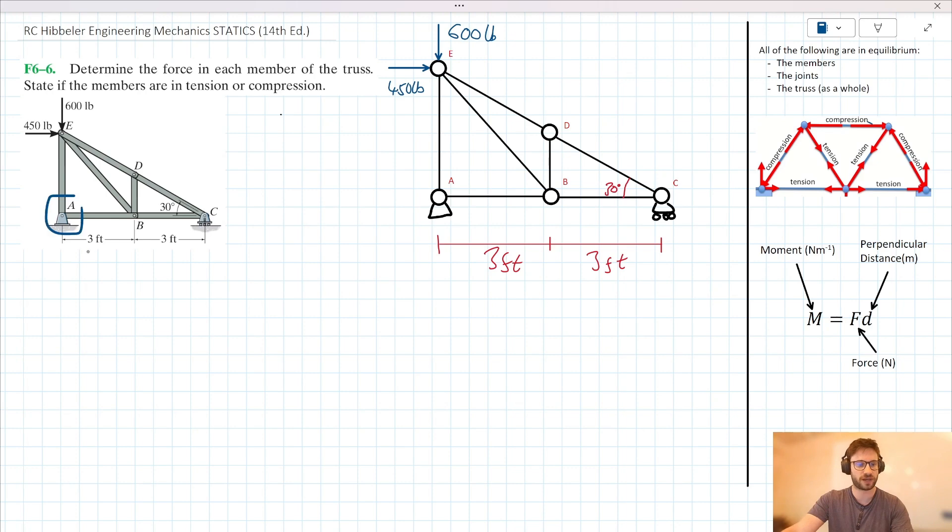So we know that we have a fixed support at joint A and a roller support at joint C here. So immediately we can add some external forces to our diagram. So we can say we've got forces acting like this here, here and here. Let's just label these up so we could call this F_AY, this F_AX and this F_CY here.